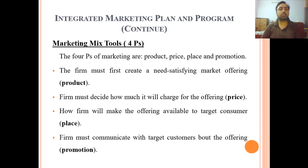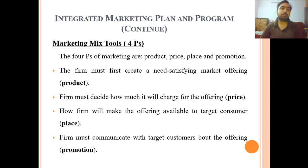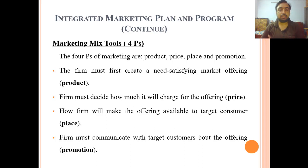Marketing mix tools — the four Ps. The four Ps of marketing are product, price, place, and promotion. Marketing mix basically four Ps pe consist karthay hain: product, price, place, and promotion. Yeh company ke controllable tools hain.